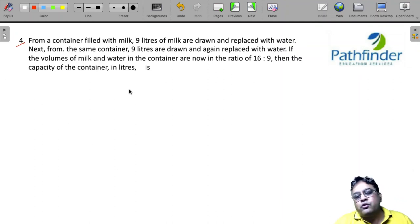CAT 2021 slot 2 quantitative aptitude question number 4. From a container filled with milk, 9 liters of milk are withdrawn and replaced with water. Next, from the same container, 9 liters are withdrawn again and replaced with water. If the volumes of milk and water in the container are now in the ratio of 16 is to 9, then the capacity of the container in liters is...